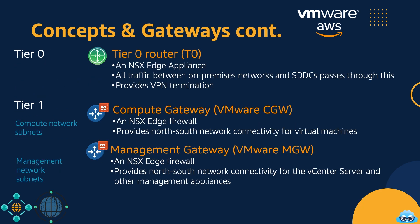Our Tier 0 router, hosted as an NSX Edge appliance within the SDDC cluster, plays a central role in our network architecture. All traffic between on-premises networks and the SDDC flows through this appliance, serving as a pivotal hub for communication. Additionally, the Tier 0 router can be used for terminating VPN connections, ensuring secure connectivity between on-premises environments and the SDDC. This versatile appliance ensures seamless and secure data flow, making it a critical component of our network infrastructure.